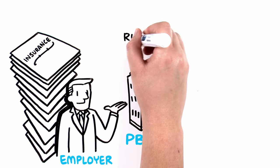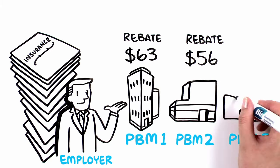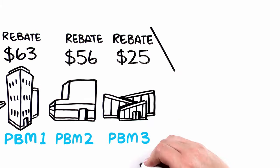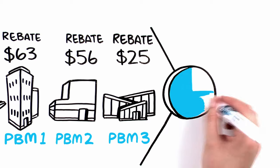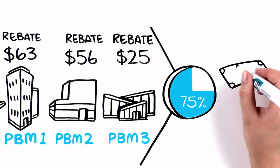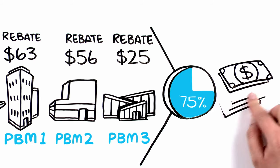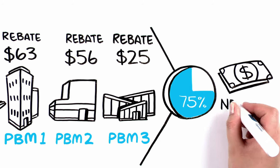Different PBMs may negotiate different rebates. Three large PBMs control 75% of the market. If different manufacturers offer similar drugs, these PBMs can drive a hard bargain, further reducing the manufacturer's net price.